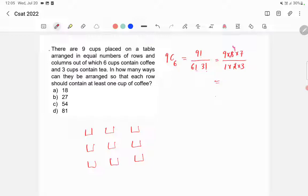So this is 12 into 7 which is equal to 84. So there are total 84 possibilities to fill six cups with coffee.